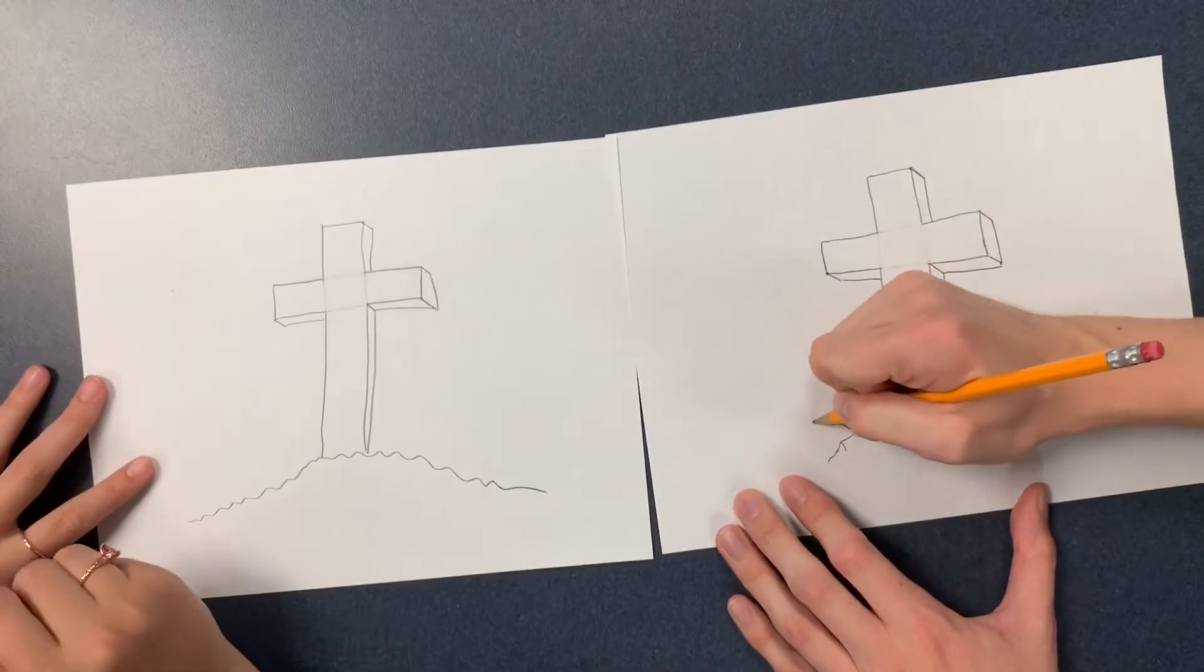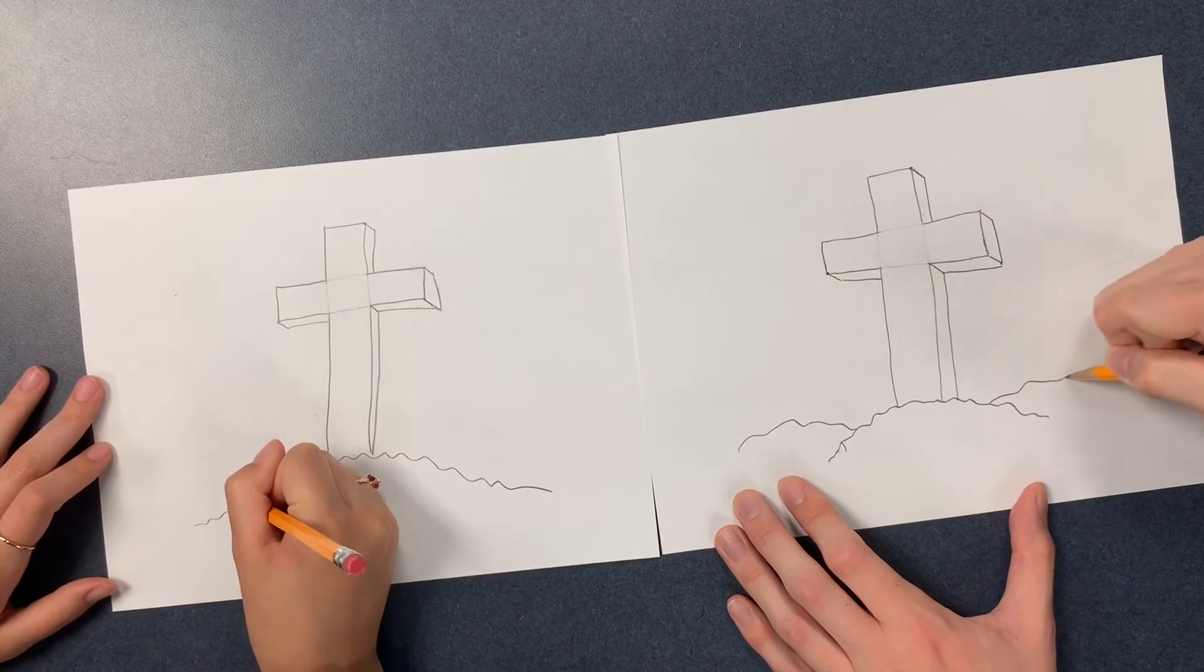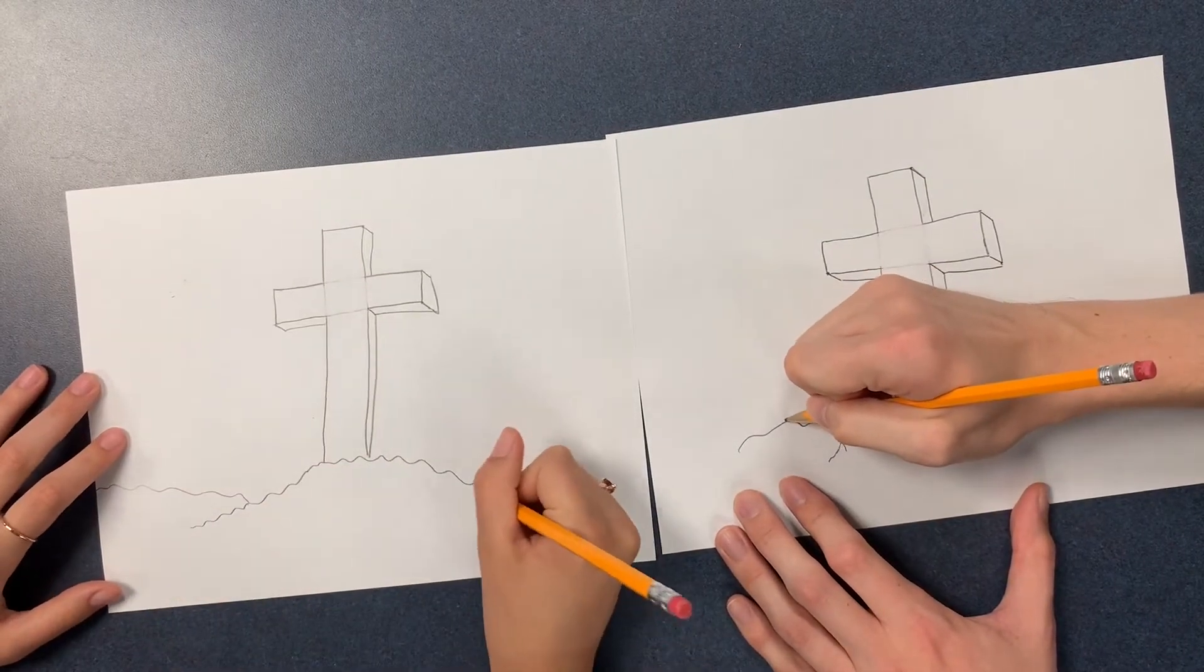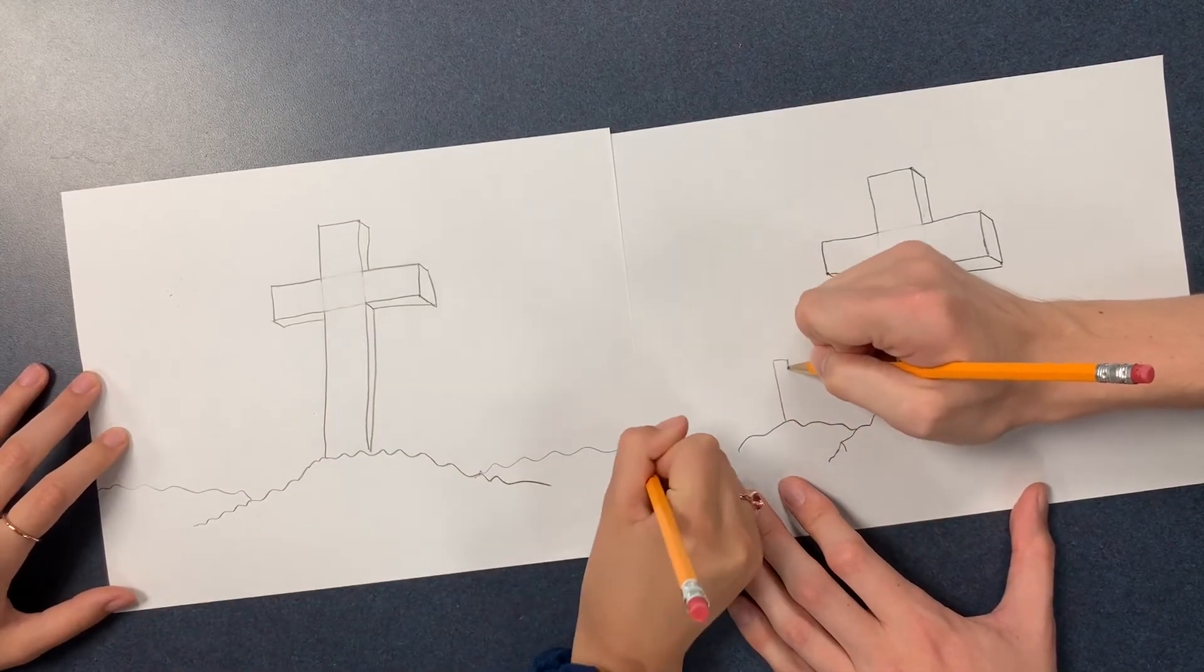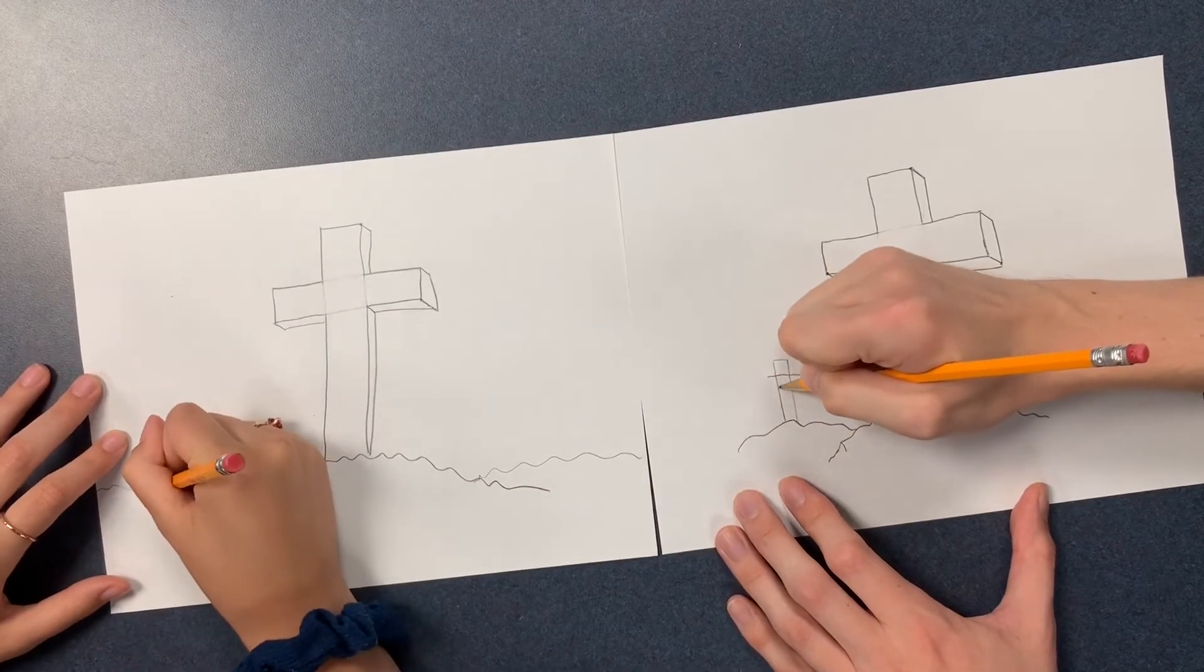And then you can do another if you want, you can do another separate thing of squiggly lines. And then try and do the same thing again.